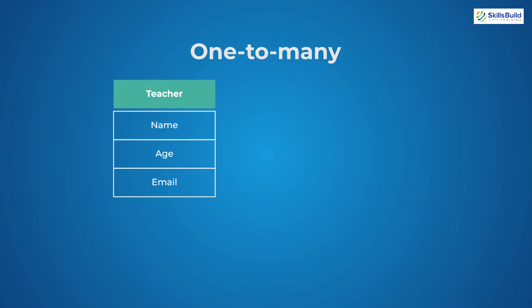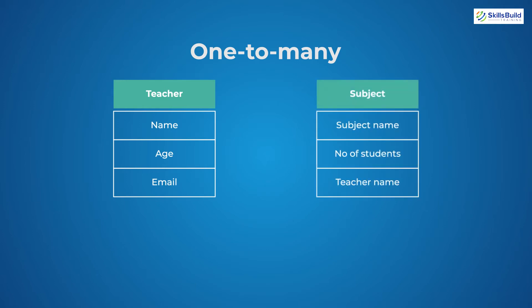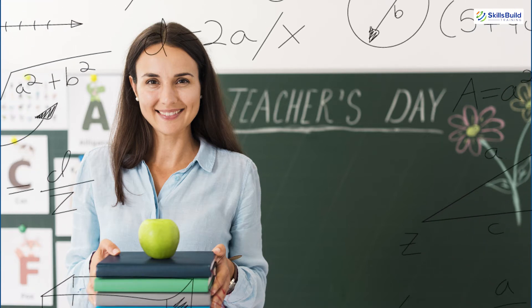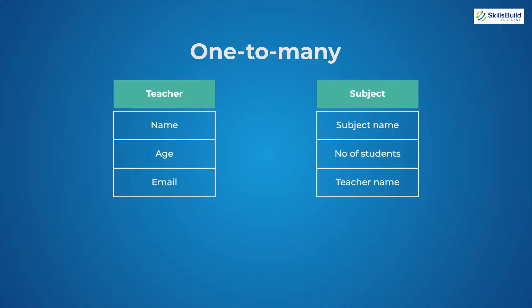Now let's talk about one-to-many relationships. Let's say we have a teacher table with name, age, and email as its fields, and another table named 'subject' with subject name, number of students, and teacher name. A subject can have only one teacher, but a teacher can teach more than one subject. For example, a teacher teaches math and science. This type of relation is one-to-many because one teacher can teach multiple subjects.